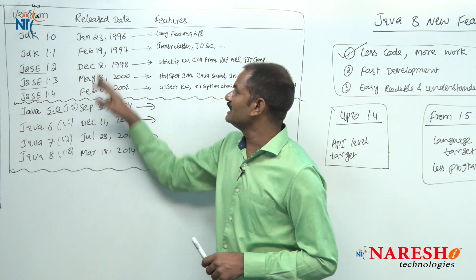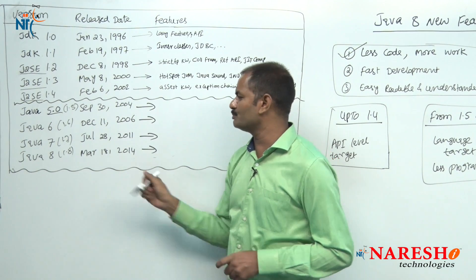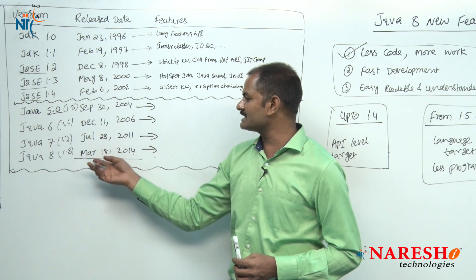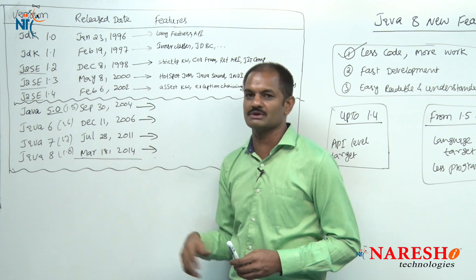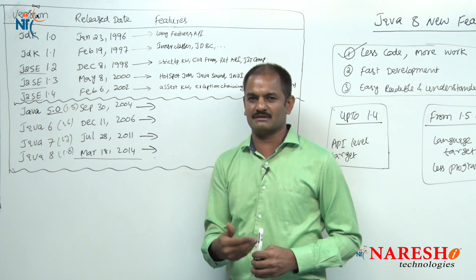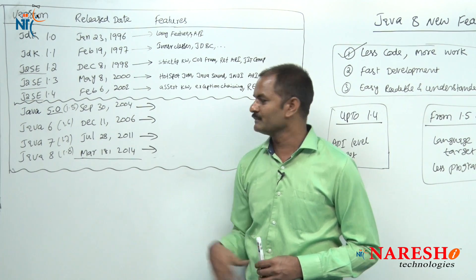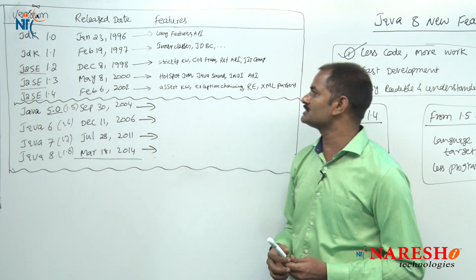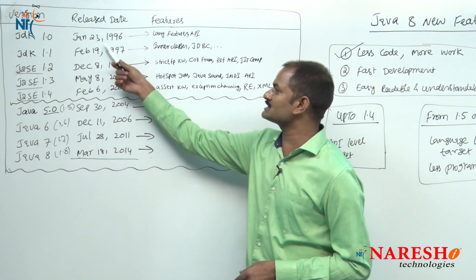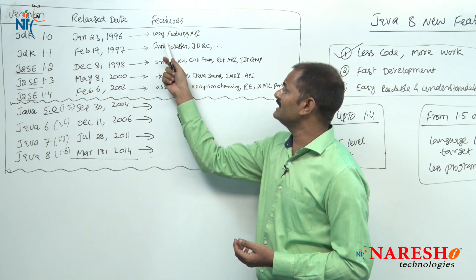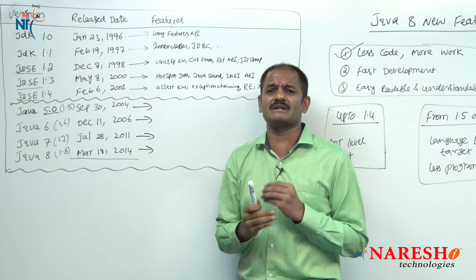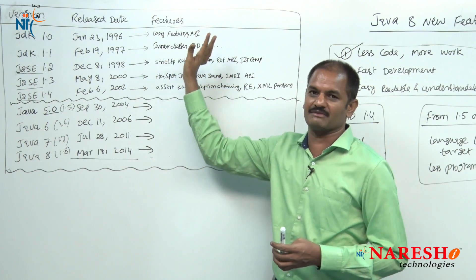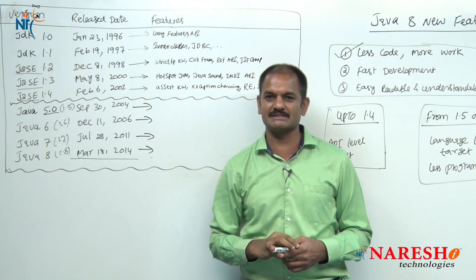If you observe in which year they were released — please remember at least the Java 8 release date: March 18th, 2014. Java 9 is coming in the next few months. Now let me quickly go through what are the different features in different versions. In the beginning, Java 1.0 gave basic language concepts and some reusable APIs. Their focus was not much on features — only basic language concepts and some predefined APIs.